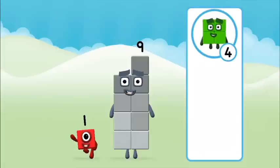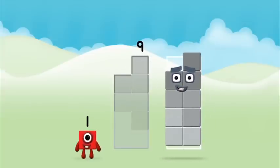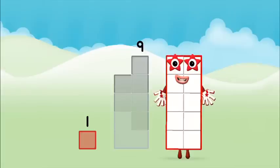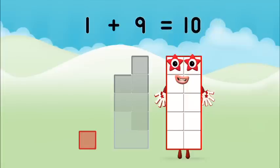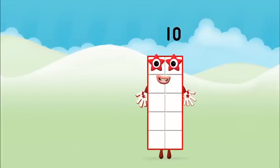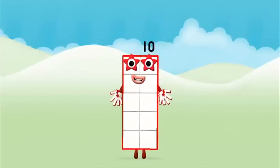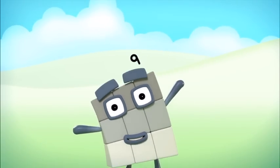Do you know which number block you'll make? Let's see. Add the number blocks together. Nine. One. One plus nine equals ten. Brilliant! You made number block ten. Two, three, four, five, six, seven, eight, nine, ten.